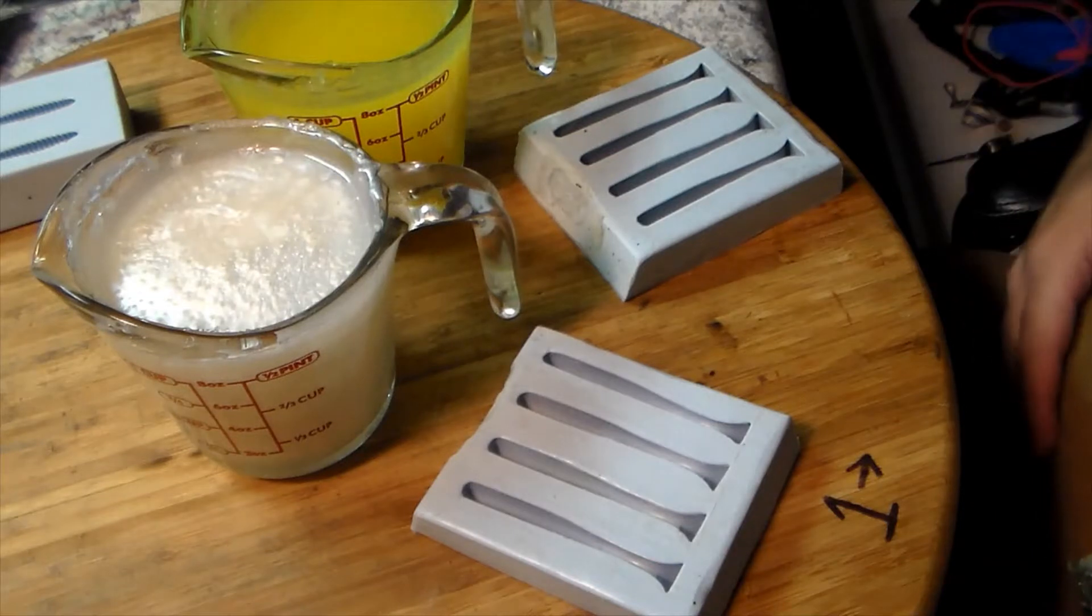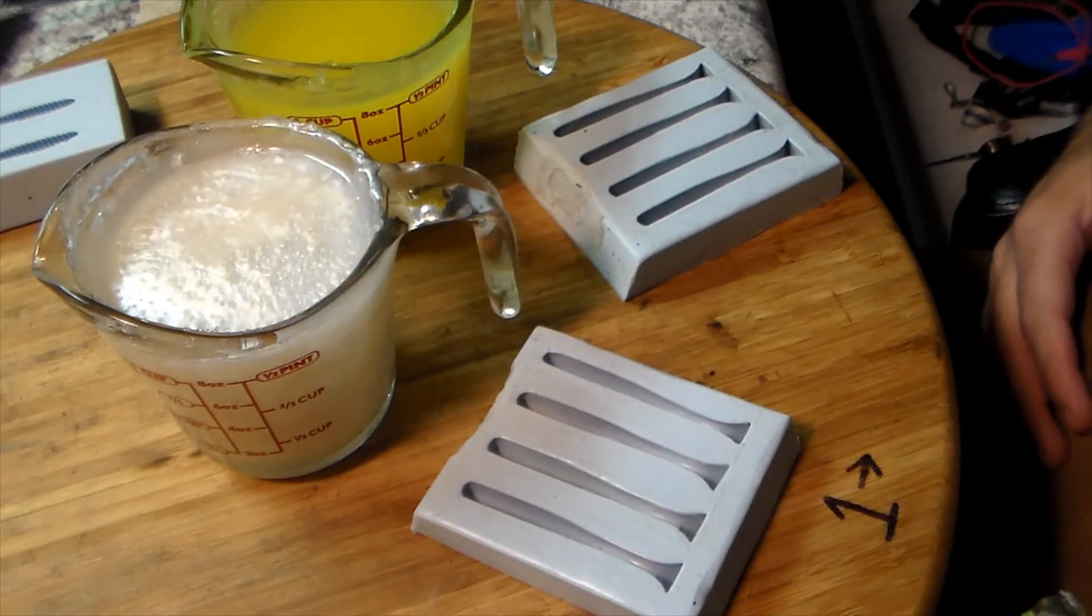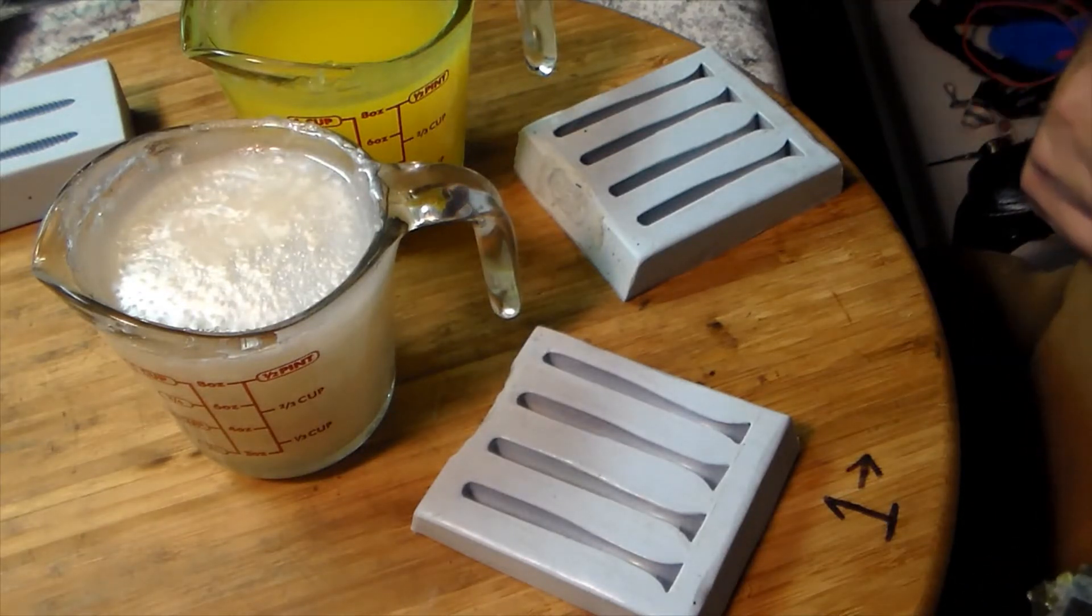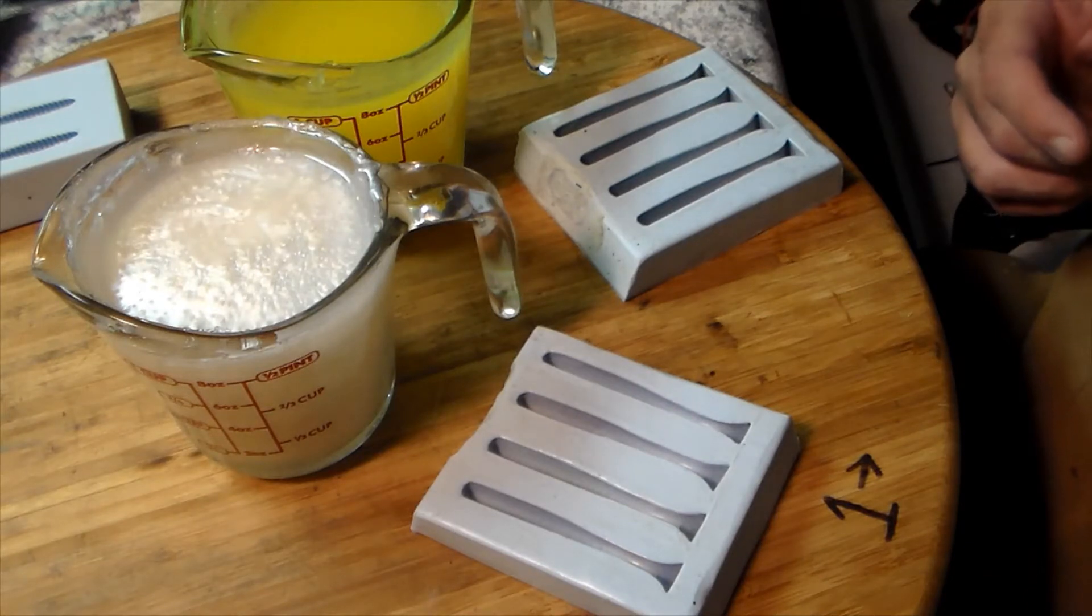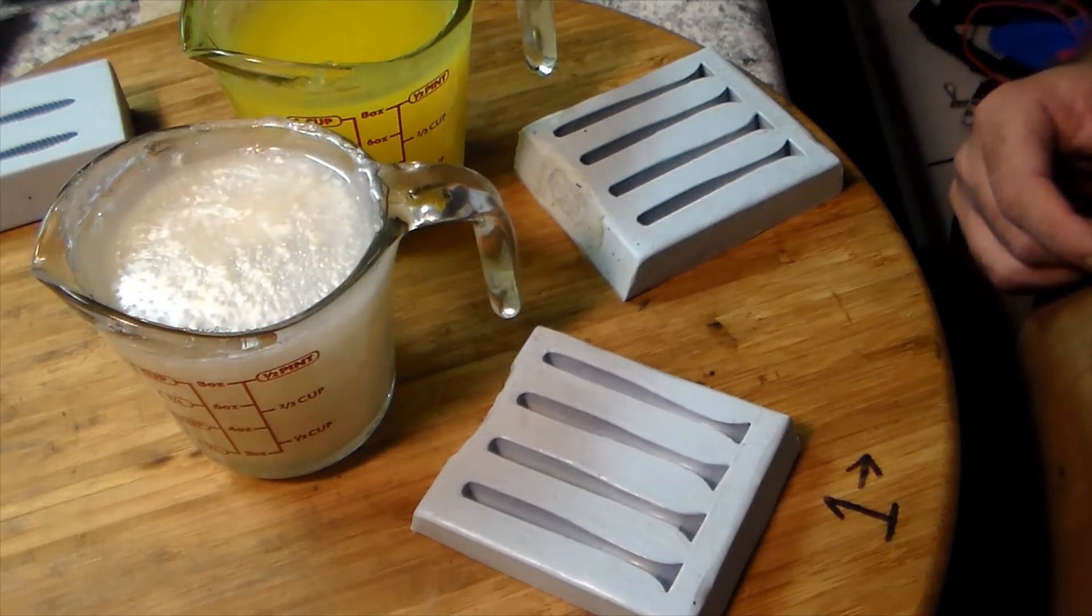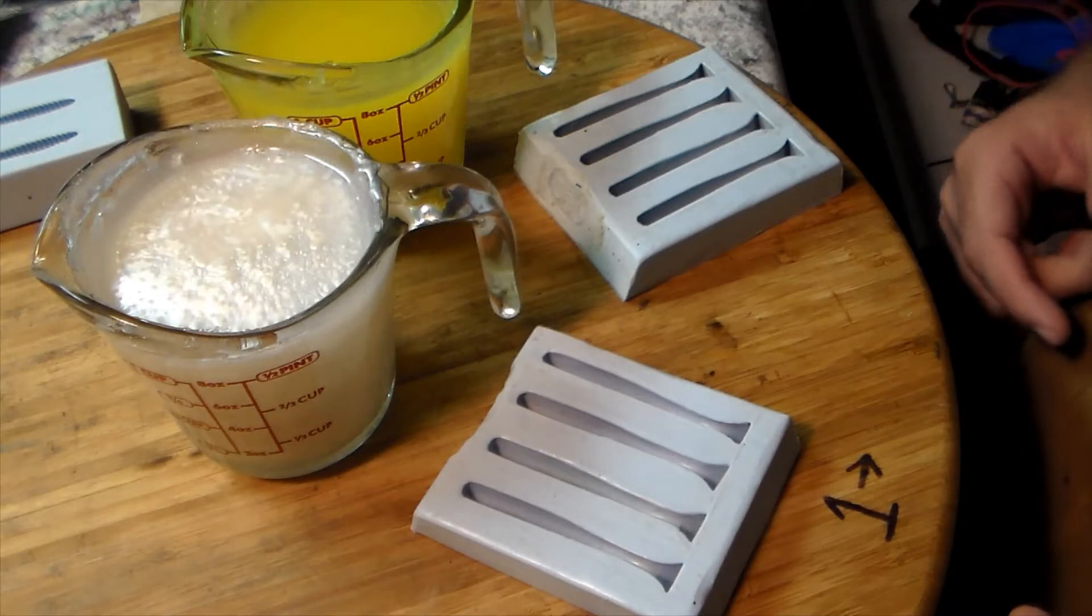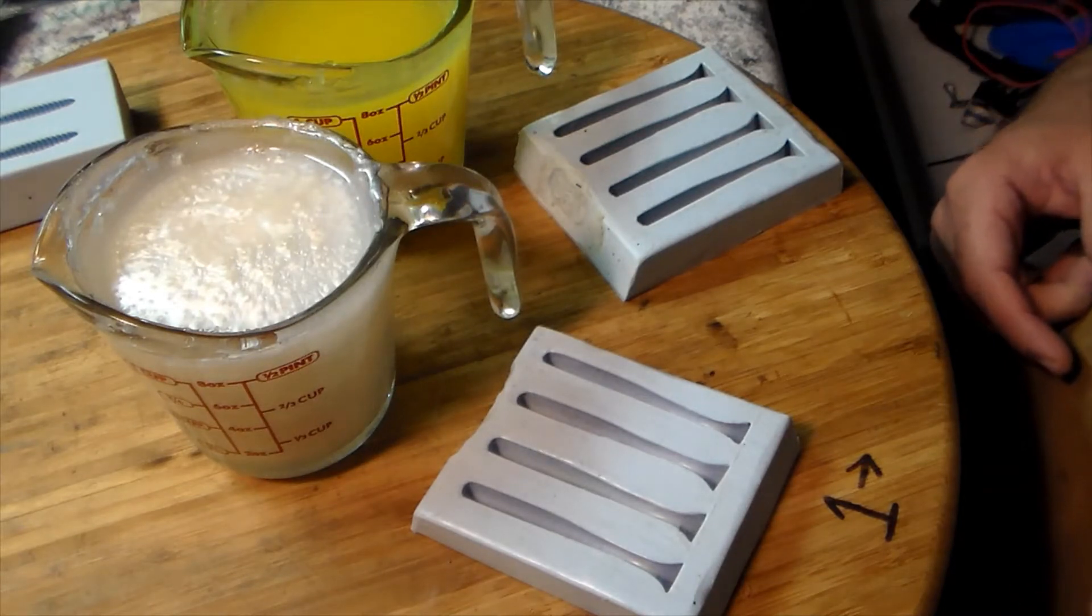So for this first round we're going to do pearl white bellies. The back and tail is going to be chartreuse. Pour a few of them and we'll switch it and do just the opposite - do chartreuse belly, pearl white back and tail.